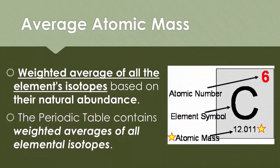Average atomic mass is the weighted average of all the element's isotopes based on their natural abundance — you're only looking at the natural isotopes, not the ones that are synthetic. The periodic table contains the weighted averages of all elements' isotopes. That's why we have an isotopic mass that is not a perfect whole number. If you look at carbon, your reference table will say 12.011 — the 12.011 is the weighted average of all of carbon's natural isotopes. Remember, you can't have 0.11 of anything if it's a subatomic particle — you can either have it or you don't. So these are averages.